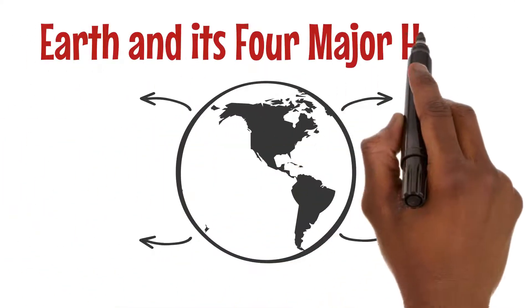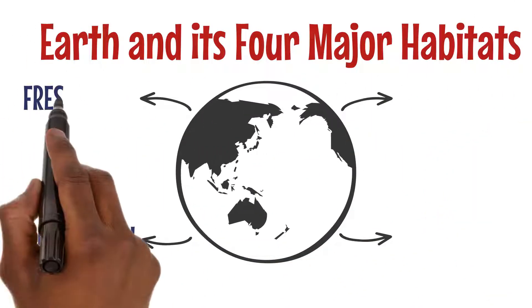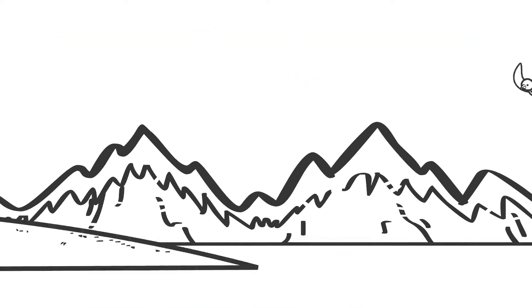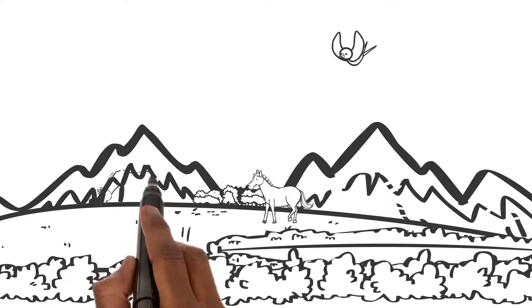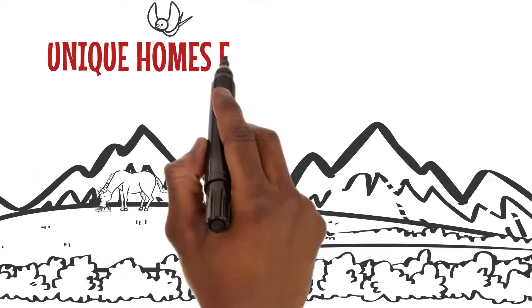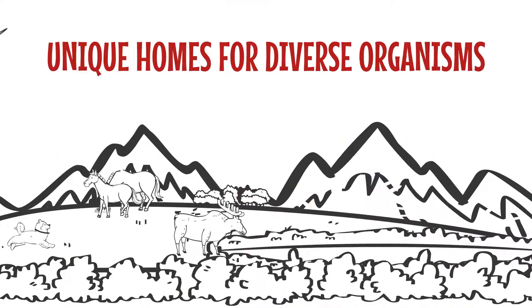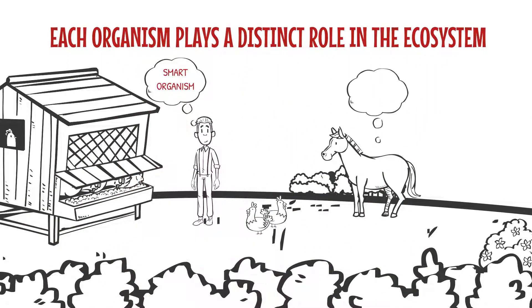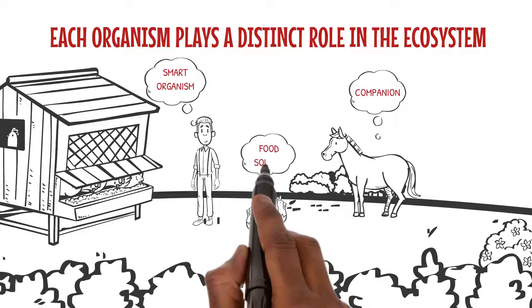Our planet Earth consists of four major habitats: terrestrial, freshwater, estuarine, and ocean. From towering forests to serene lakes, these habitats provide unique homes for diverse organisms. Within these habitats, organisms occupy specific niches, their unique roles in the ecosystem.